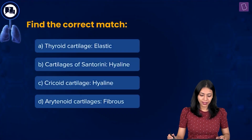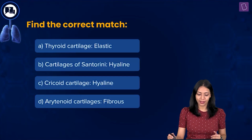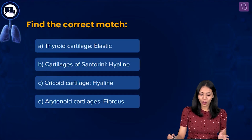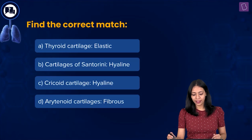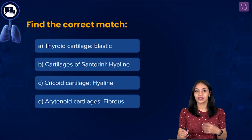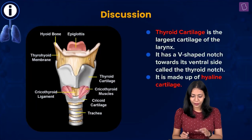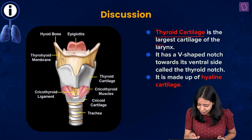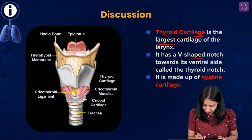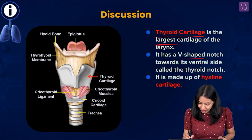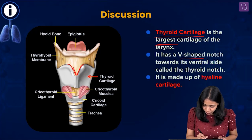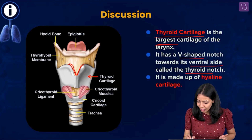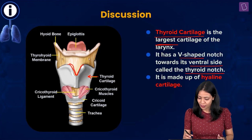Now let's look at the question: find the correct match. Option A: thyroid cartilage — elastic. Option B: cartilages of Santorini — hyaline. Option C: cricoid cartilage — hyaline. Option D: arytenoid cartilage — fibrous. Thyroid cartilage is the largest cartilage of the larynx; it is V-shaped with a thyroid notch on the ventral (front) side. This cartilage is made up of hyaline cartilage, so option A is incorrect.